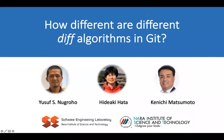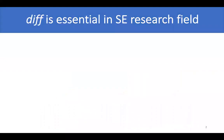Hello everyone. I'm Yusuf Sulistiyon Groho from NARA Institute of Science and Technology, Japan. In this opportunity, I would like to present my journal paper entitled 'How Different Are Different Diff Algorithms in Git?'